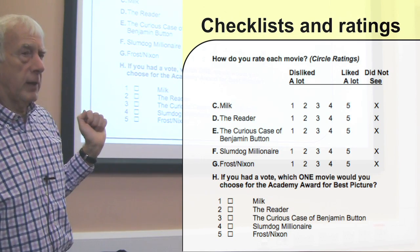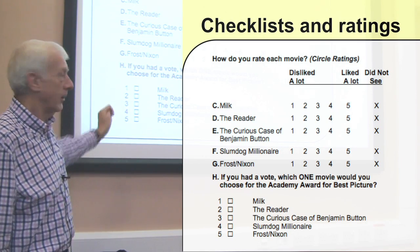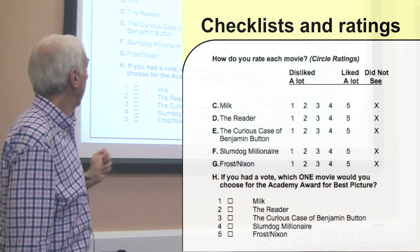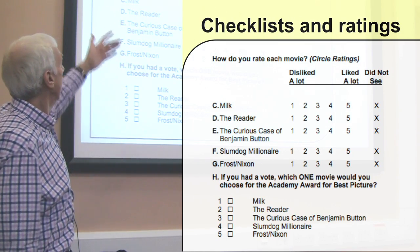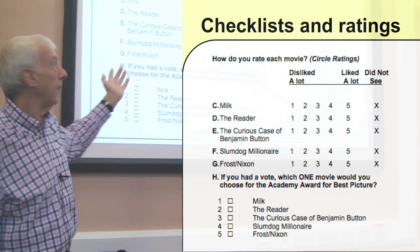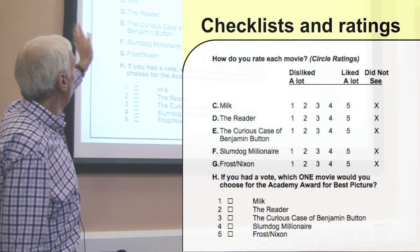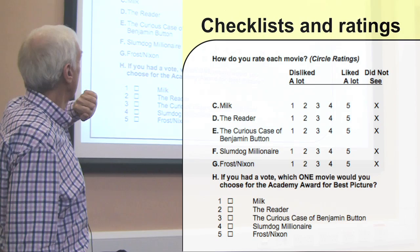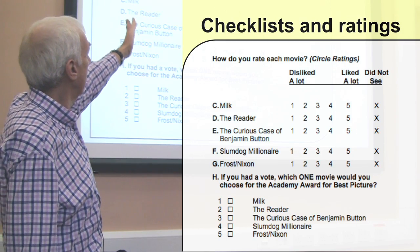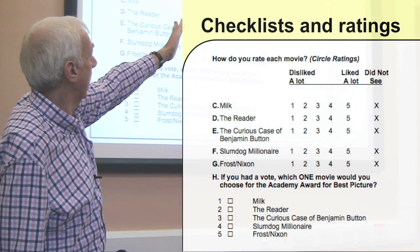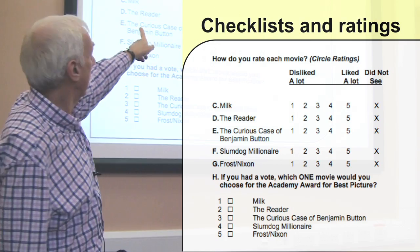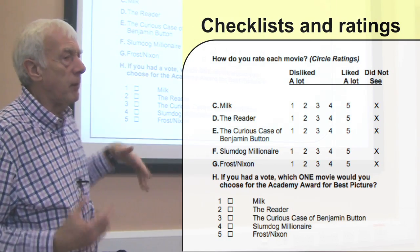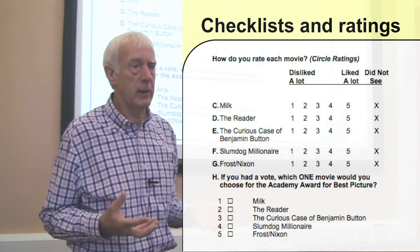I think the movies are about three or four years old, actually — I remember seeing some of these about three or four years ago, or perhaps even longer, so it's not very up to date. But here's simply people's opinions about films. They're asked to rate Milk, The Reader, Curious Case of Benjamin Button, and so on, as either disliked a lot or liked a lot. You can see there's a one to five scale — we're that familiar with these things now, it's pretty obvious how to fill it in.